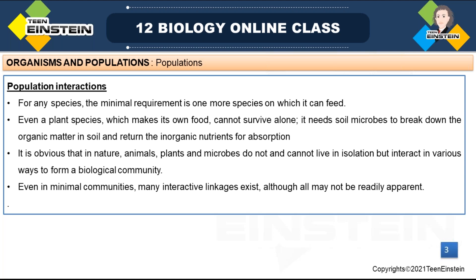For any species, the minimum requirement is food. We can't say that on Earth only a single species is living — that's not possible. For feeding, there will be another species. So for any species, the minimum requirement is at least one more species on which it can feed.